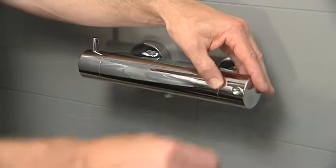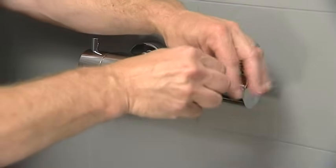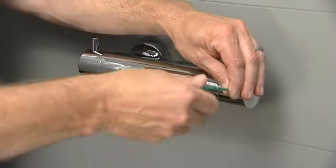Remove the handle using the hex key. You will need to remove the handle prong to access the grub screw on the thermostatic handle.